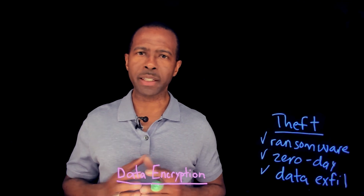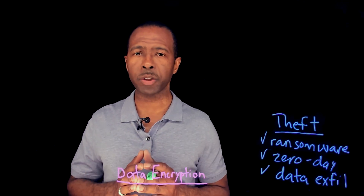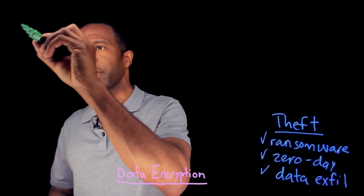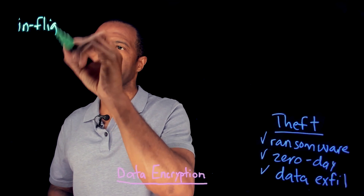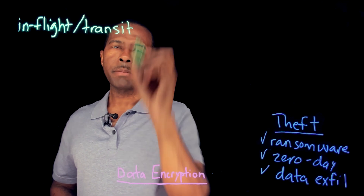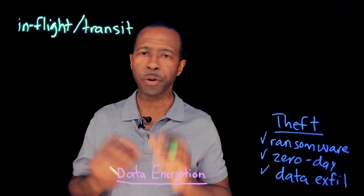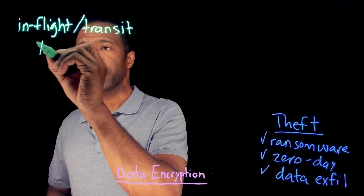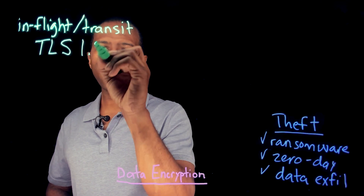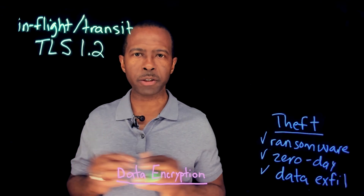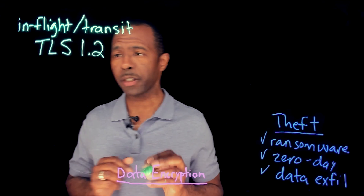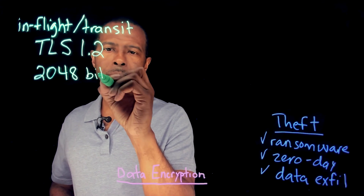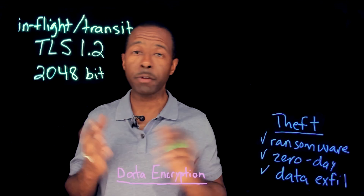Let's talk about the different ways that a solution you are evaluating, or maybe even your current solution, should implement and turn on data encryption to protect all of your data that is in flight and in transit. This is super important because as that data is traversing across the wire or your network, you want to make sure it's done so in a secure and encrypted fashion. That solution should take advantage of TLS version 1.2 at least, which gives you that transport layer of security and added protection as data moves across your network. In addition, it should also have at least 2048-bit key support to keep that data even more secure.